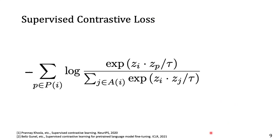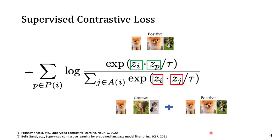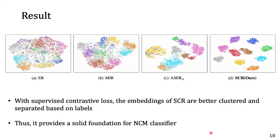This is the supervised contrastive loss we use. The loss shown here is for a specific sample i. In the numerator, z_i represents the embedding for sample i, and z_p represents the embeddings for all positive samples, which include the augmented view of sample i as well as other samples from the same class. In the denominator, z_j are the embeddings for all samples from the mini-batch, including both negatives and positives. By minimizing this loss, we want sample i to be close to the positive samples and far apart from the negative samples. With the supervised contrastive loss, the embeddings of SCR are much better clustered and separated based on label, providing a solid foundation for using the NCM classifier.